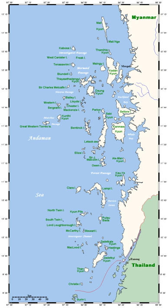Oceanic islands are mainly of volcanic origin, and widely separated from any adjacent continent. The Hawaiian Islands and Easter Island in the Pacific, and Eel Amsterdam in the South Indian Ocean are examples.